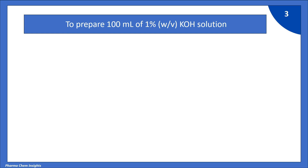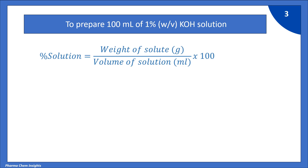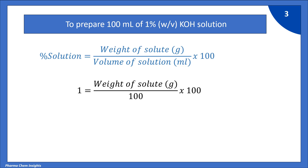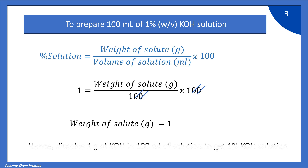To prepare 100 ml of 1% weight by volume KOH solution, we use the formula: percent solution equals weight of solute in grams divided by volume of solution in ml, into 100. Putting in the values: 1 equals weight of solute divided by 100, into 100. The 100s cancel, giving weight of solute equal to 1 gram. Hence, dissolve 1 gram of KOH in 100 ml of solution to get 1% KOH solution.